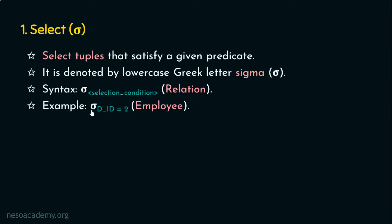As an example, I am going to select all the tuples from the employee relation where the department ID is equal to 2. This employee relation may contain a lot of tuples, but we are selecting only the tuples that match the condition — department ID equals 2. This is how we write a relational algebra expression for the select operation. The comparison operator used in this example is 'equal to'.